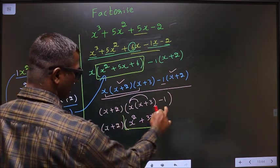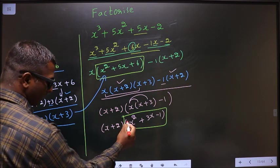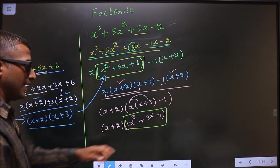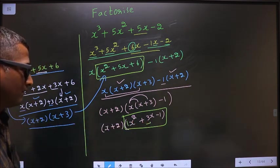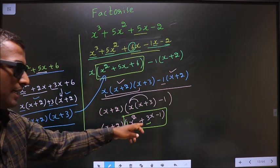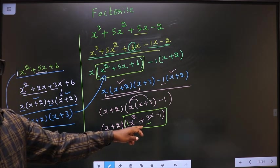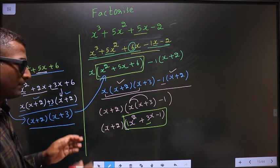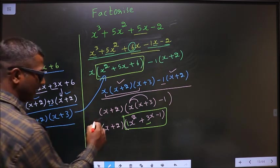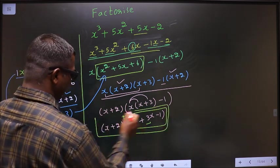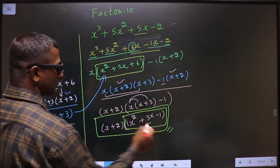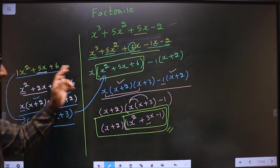Now, this is a quadratic. So 1 into 1 is 1 and here I should get 3. So I cannot split, I cannot factorize this quadratic. Thus, we stop here and this is our final answer. Is it clear?